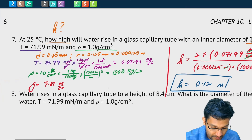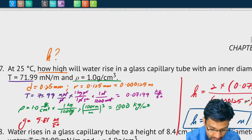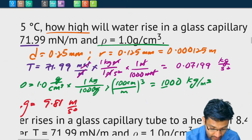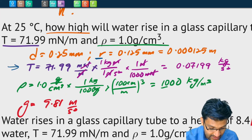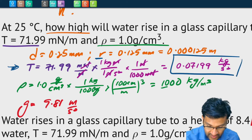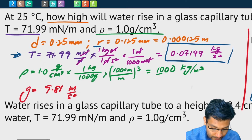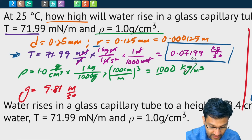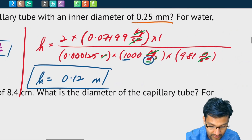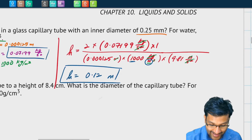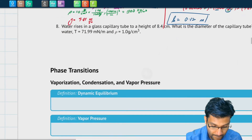How did we solve this problem? We used the equation for capillary height. We got the diameter, found the radius, and converted to meters. We converted T to kg/s² and density to base units. Then it's just plugging numbers into a calculator. You can pause the video here and try number eight on your own, then unpause and we'll do it together.